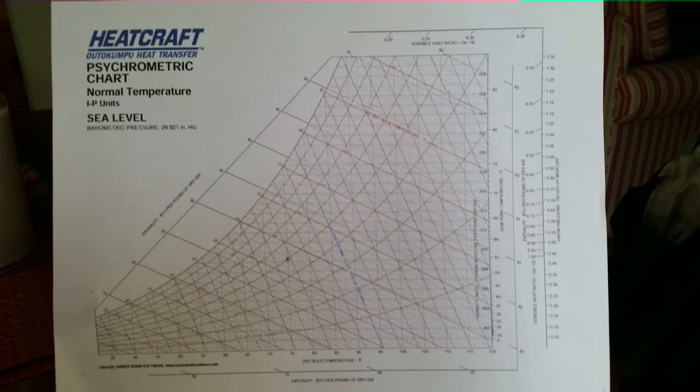This is video number two in our psychometric chart series. We're going to plot one point on the chart and figure out some of the characteristics of that point based on where it's at. We're going to take a temperature and relative humidity reading, put it on the chart in the proper spot, and draw a few lines.